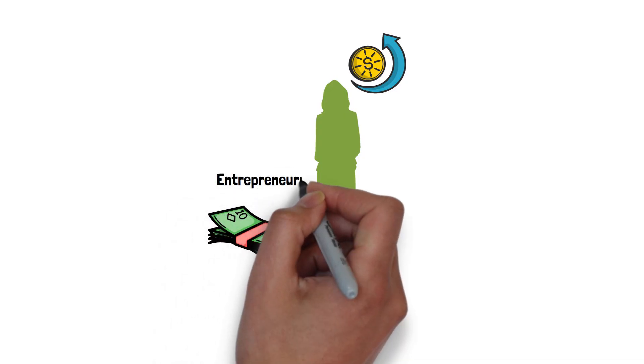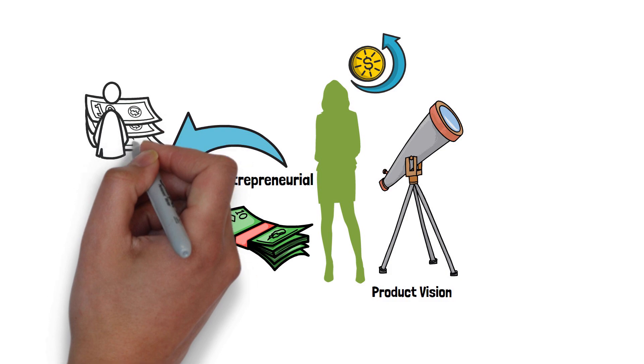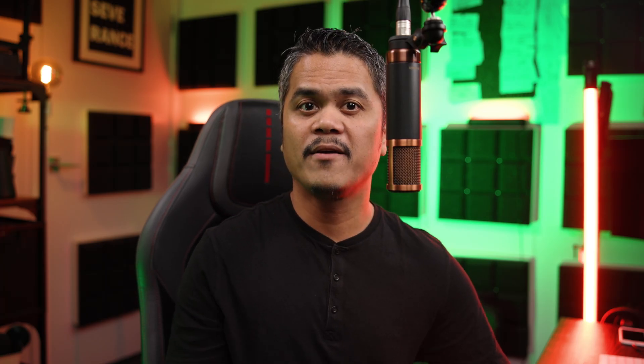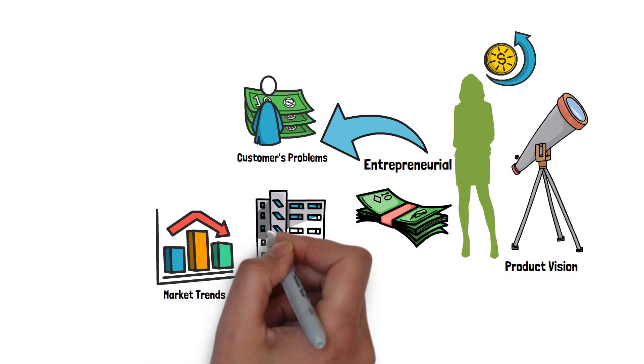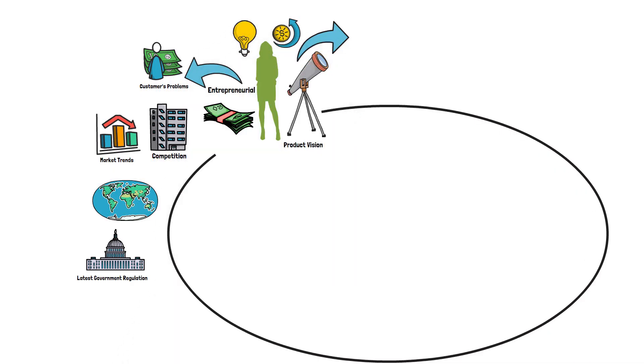Besides avoiding a self-serving individual, by having two different individuals as the Product Owner and the Scrum Master, these two individuals will be more focused. As someone accountable for maximizing the value of the product, the Product Owner needs access to the budget. We can't expect someone to be accountable for the return on investment if we don't allow them to manage the budget. The Product Owner needs to be entrepreneurial, which requires vision and a long-term outlook for the product.